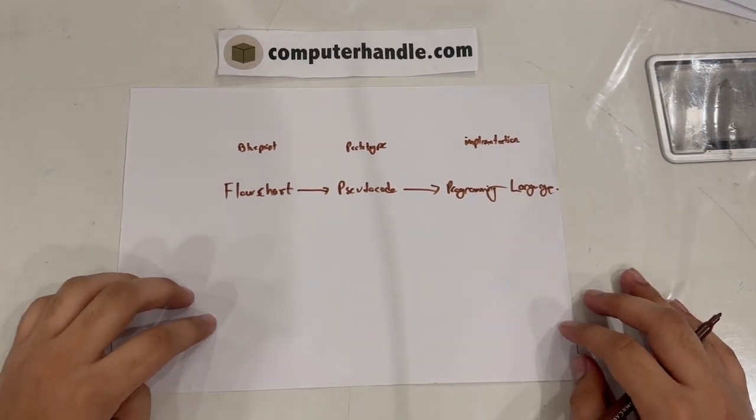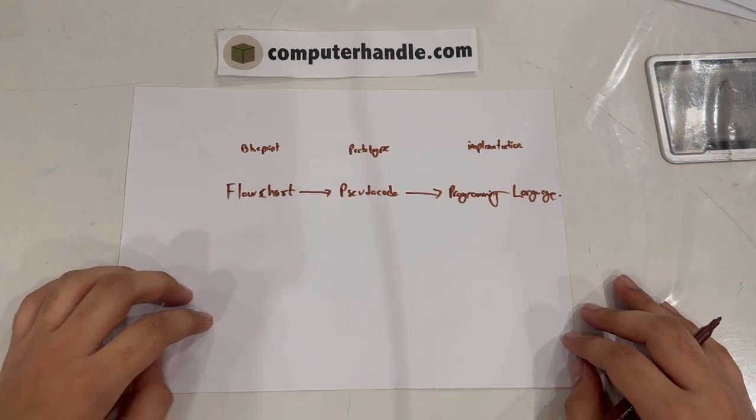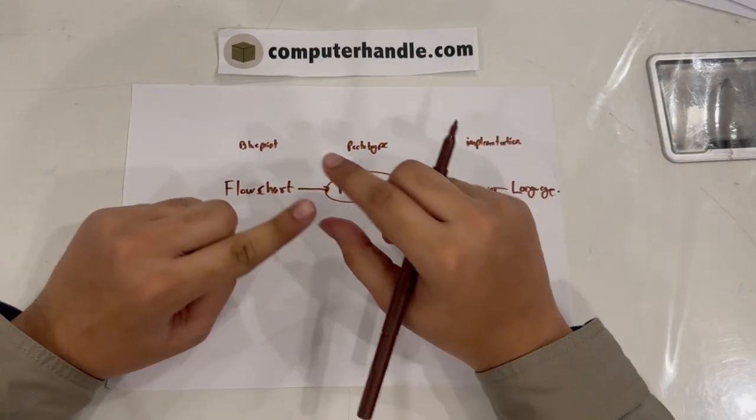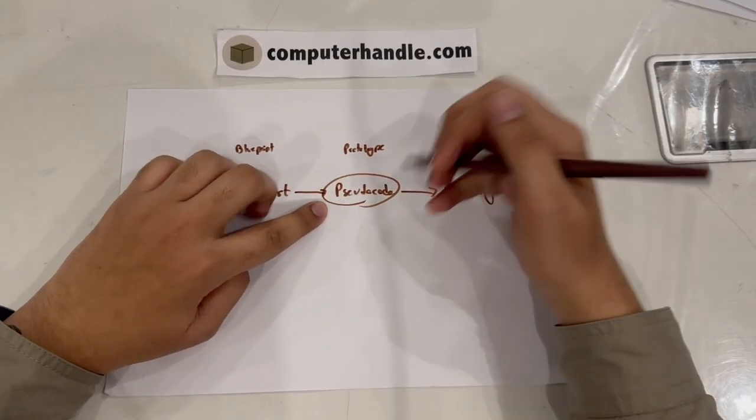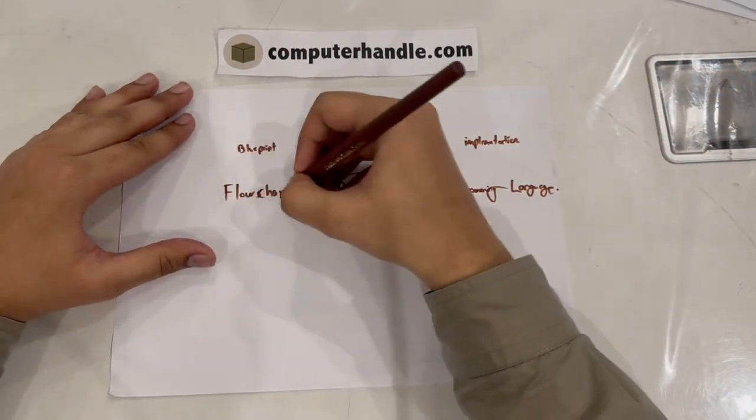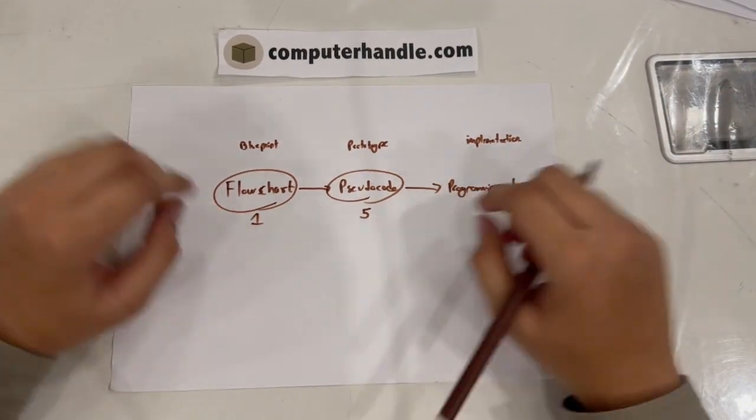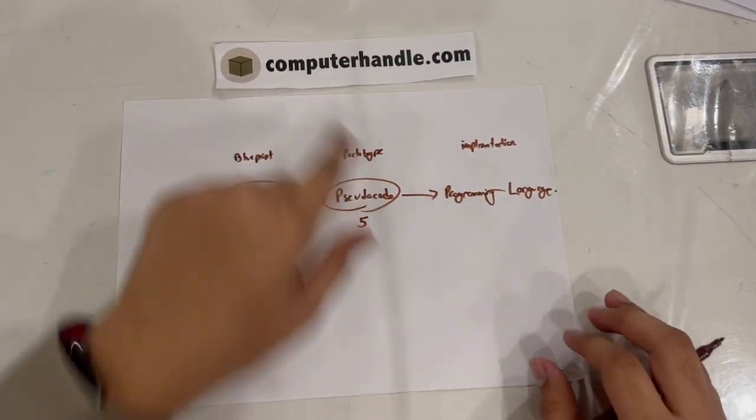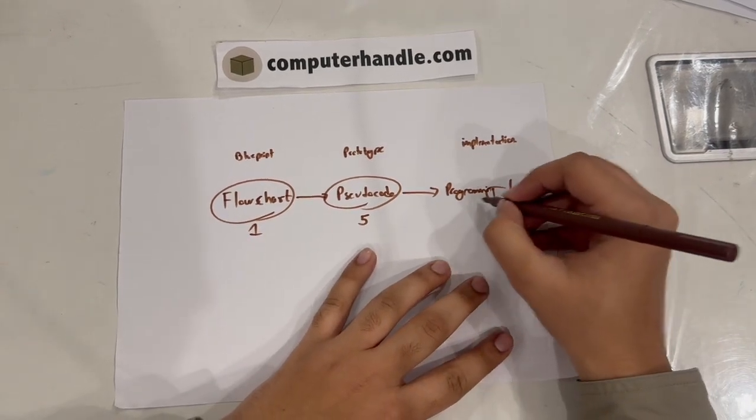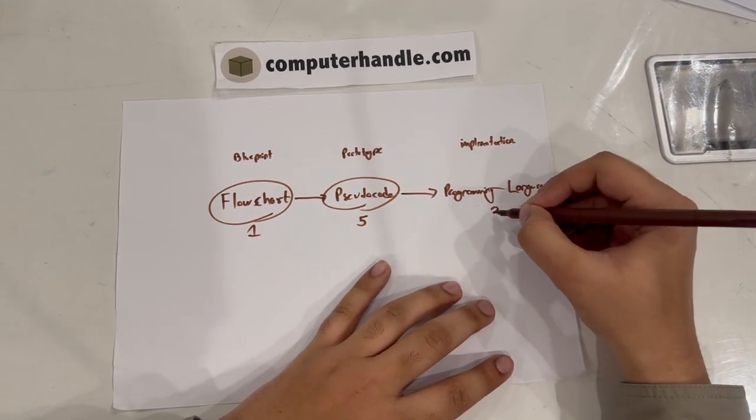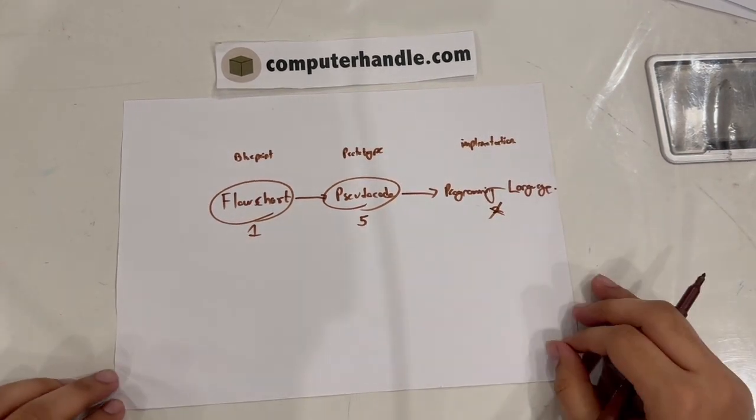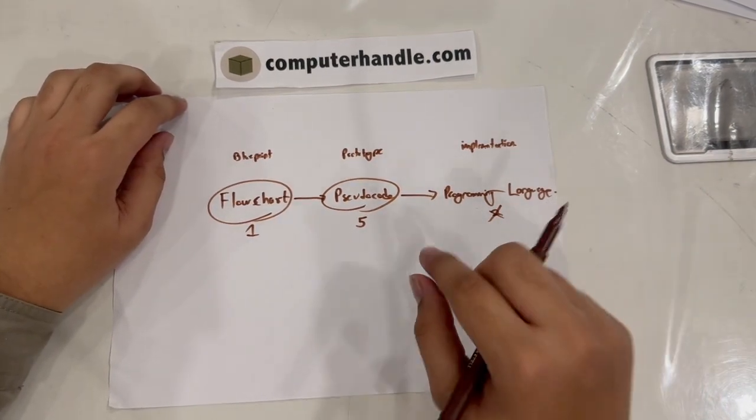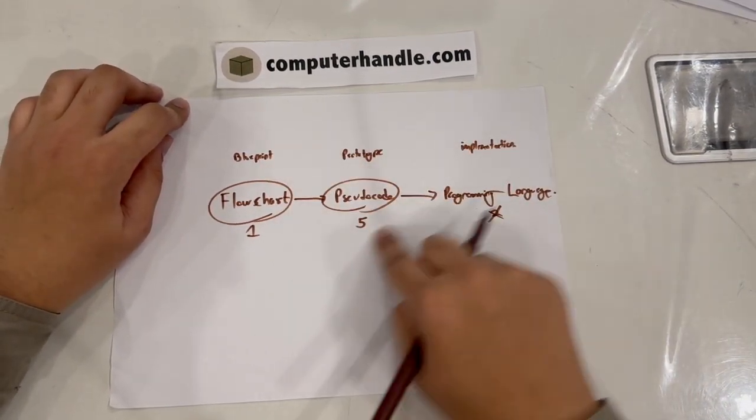The real thing computerhandle.com was made for was to help people understand this so heavily that we've got nearly five chapters on this and just a single chapter on this. And in the future, if computerhandle.com continues, we may even include one to two chapters on this, but we have no plans for that yet. Computerhandle.com was made mainly for this part.